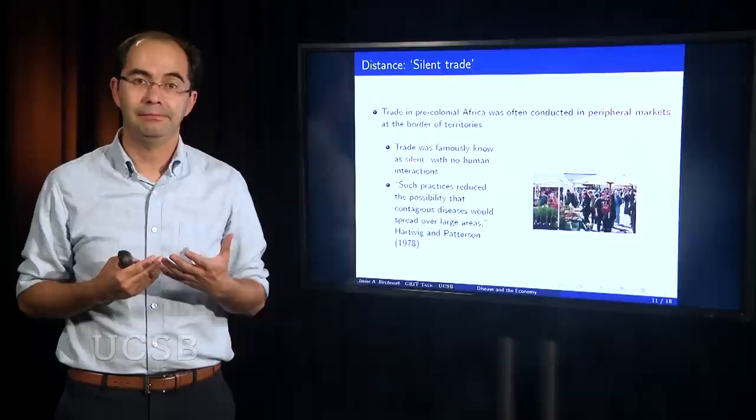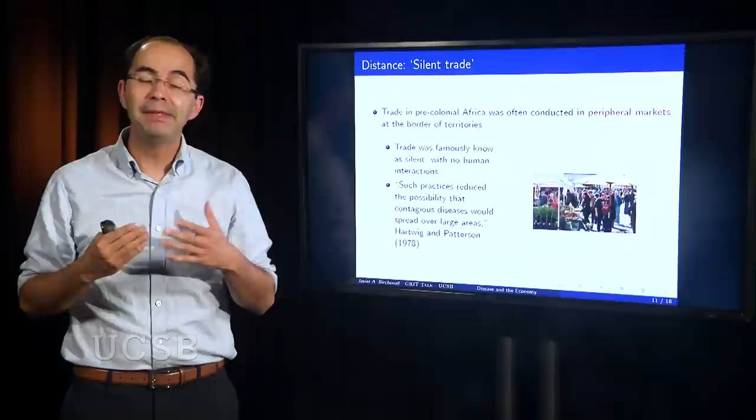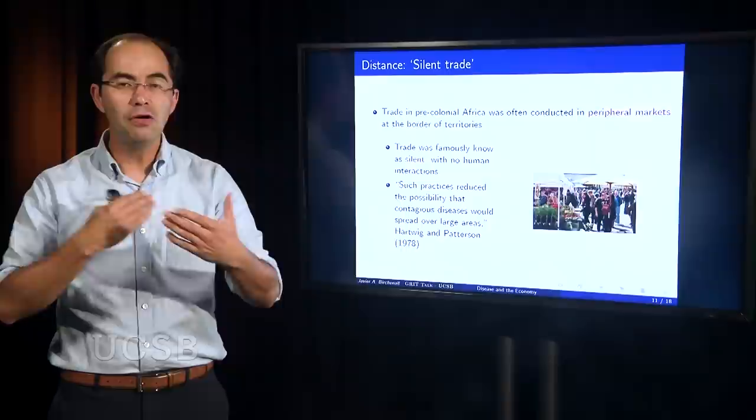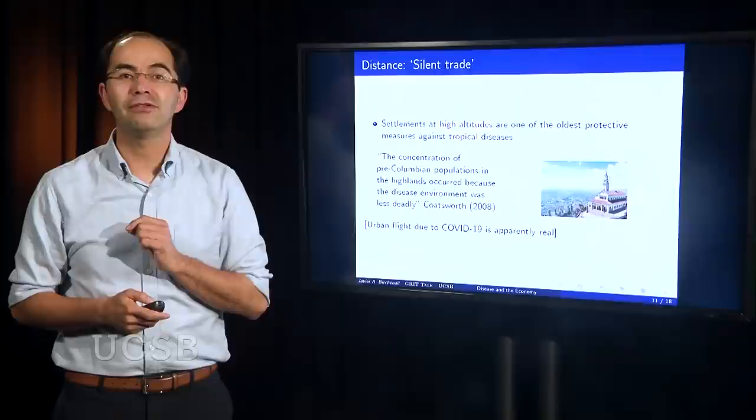Now, historians have viewed this practice as a way to reduce contagious diseases because you contain essentially the amount of disease in one particular area. Now, with COVID, one of the emerging sort of interesting emerging things that we see is the rise of online trading or online exchange. Amazon was popular, it became more popular, and in certain parts of the world where it wasn't popular, now it's gaining ground. This is a form of exchange that also is not very personal. There is no physical contact between traders.